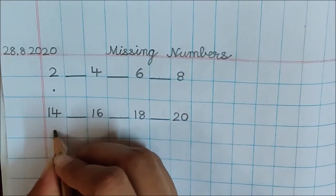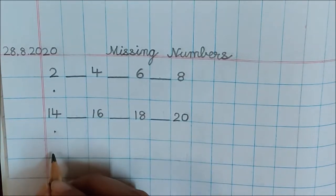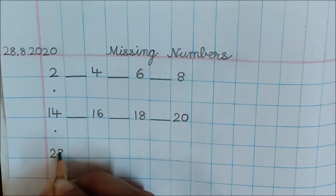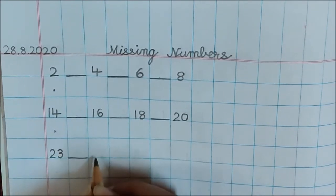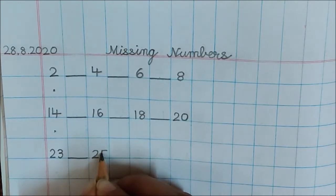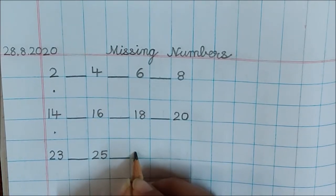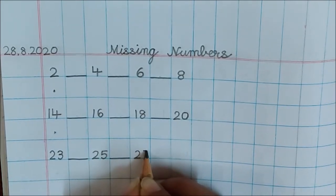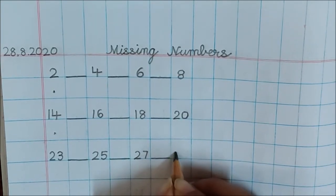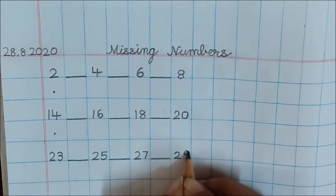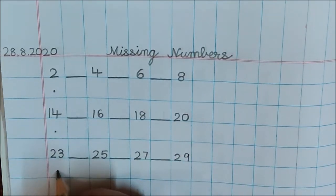Now below 14, put a dot. And in the next box, write down 23, dash, 25, dash, 27, dash, 29. Now below 23, put a dot.